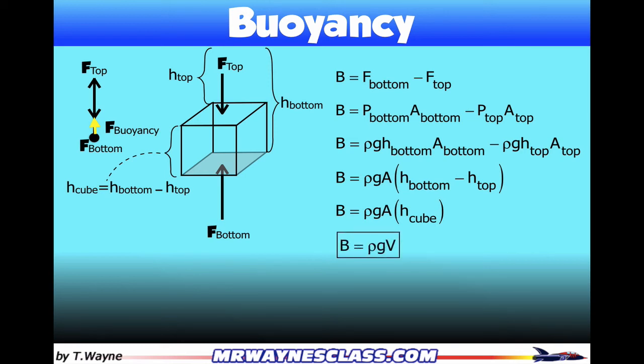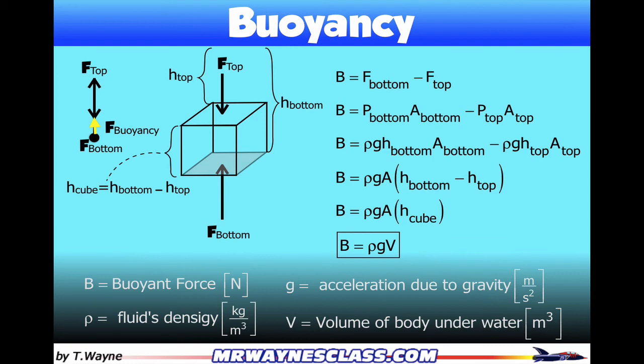So the buoyancy force is equal to rho g V, where capital B I'm using as the variable for the buoyancy force measured in newtons, the fluid's density in kilograms per meter cubed, just standard units, and the acceleration due to gravity in meters per second squared.